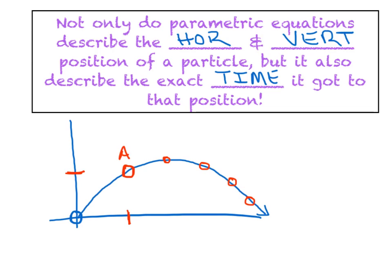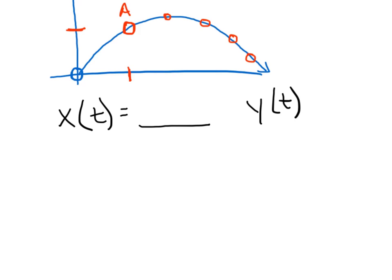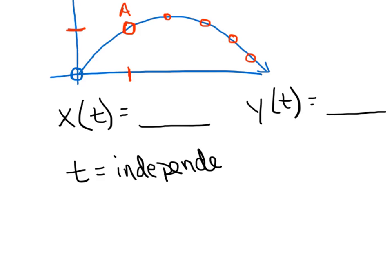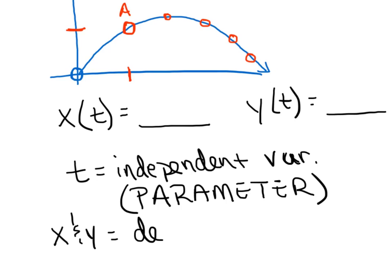Every point on this graph has its own unique t value — the time it took to reach that point. We've got three variables in play, and that's where it gets interesting. Generally, the notation defines two equations to represent the curve: x of t equals something and y of t equals something. T is now the independent variable, and most importantly we call it the parameter — hence the name 'parametric equations.' Then x and y are both dependent variables, meaning the value of x and y depend on the value of t that we choose to substitute.